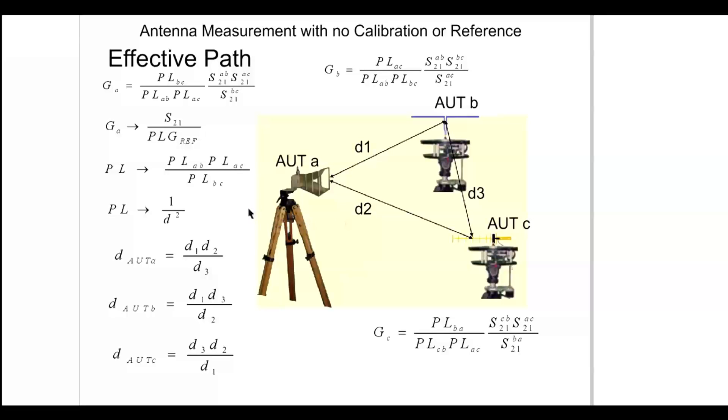For example, if we were in a chamber with a distance of 3 meters between both A and B and A and C, but we had a distance of 1 meter between B and C, we would have an effective distance of 9 over 1 or 9 meters.